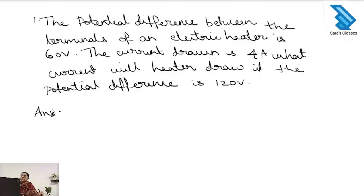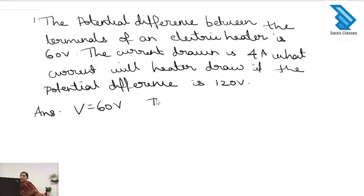The first question: the potential difference between the terminals of an electric heater is 60 volt, the current drawn is 4 ampere. What current will the heater draw if the potential difference is 120 volt? The voltage is given as 60 volt and the current is given as 4 ampere.